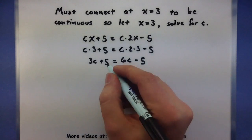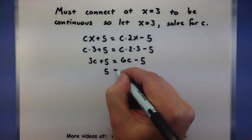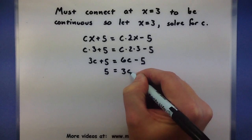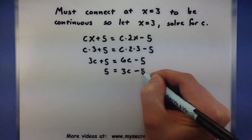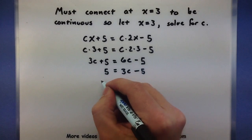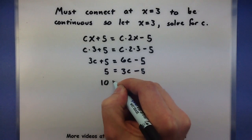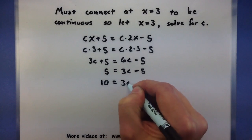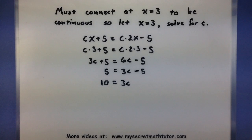I'll start off by subtracting 3c from both sides. Then I'll add 5 to both sides. That gives me 10 equals 3c. Alright, this is almost done. Now let's divide both sides by 3.